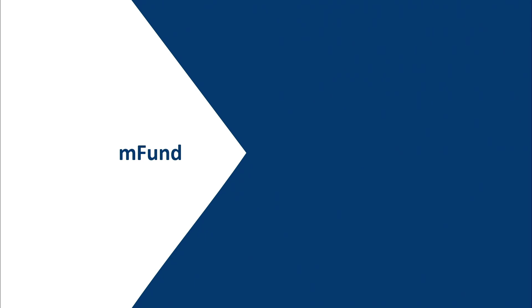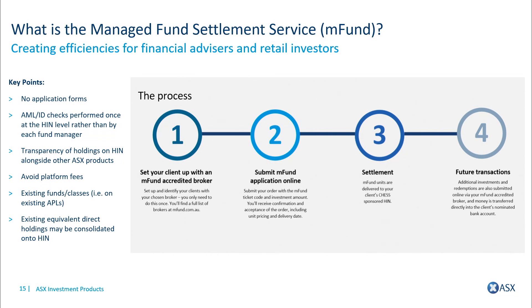I'd like to finish off by touching on M-Fund. M-Fund is a service created by the ASX six or seven years ago that allows investors and their financial advisors to buy unlisted managed funds using ASX's infrastructure. An investor can set up an account with their online broker who is a participant of M-Fund. Because the broker has done the AML and KYC checks, all identity sits with that broker. The investor can then simply place an order into an unlisted managed fund available on the M-Fund service.